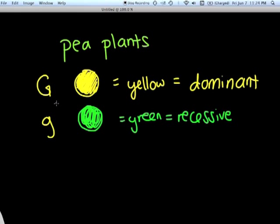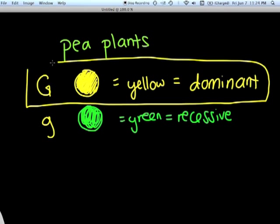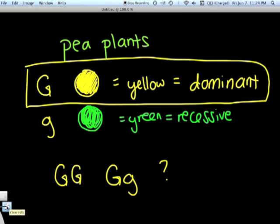So let's say we are starting out with a yellow pea. We want to figure out, does this plant have a big G big G genotype, or a big G little g genotype? So in this test cross, what Mendel did was he crossed an individual with this unknown genotype. All we know is that they have one big G.